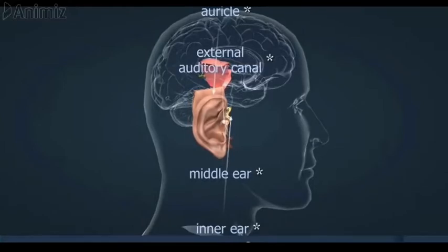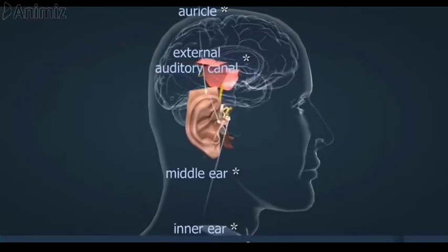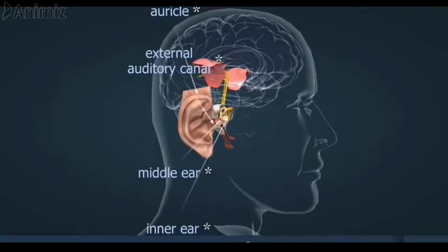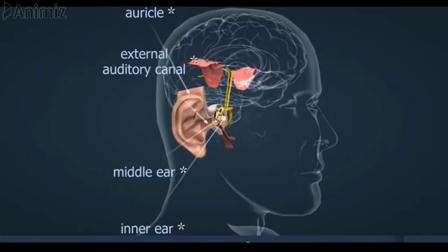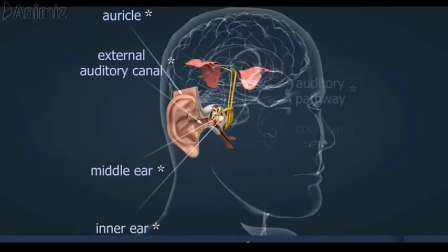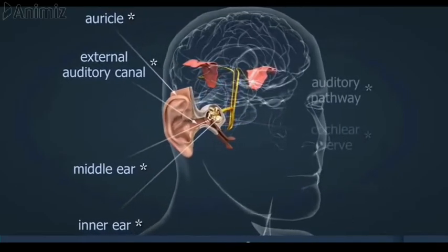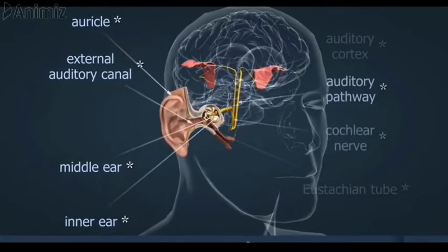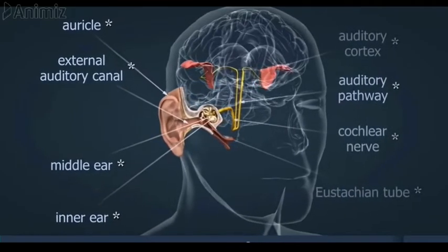The anatomy of our hearing or auditory system is extremely complex, but can be broadly divided into two parts, one being called peripheral and the other central. The peripheral hearing system consists of three parts which are the outer ear, the middle ear and the inner ear.